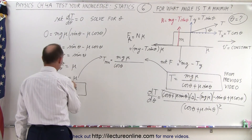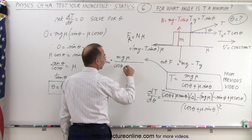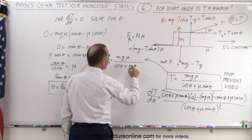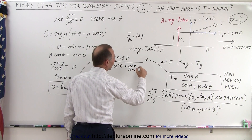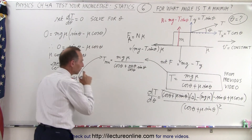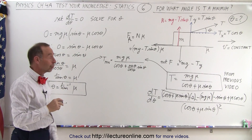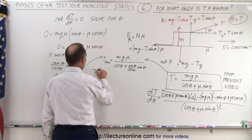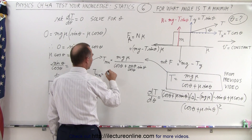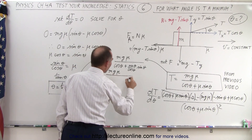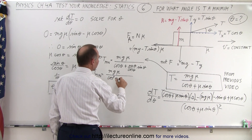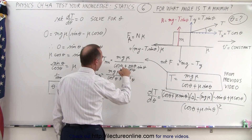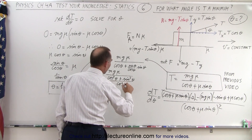Notice that mu is going to be equal to the tangent of theta, which means we can substitute: the denominator becomes cosine of theta plus tangent of theta — which is sine of theta divided by cosine of theta — times the sine of theta. Writing all of that over a common denominator, T_min equals mg·mu divided by cosine squared of theta plus sine squared of theta, all divided by cosine of theta.